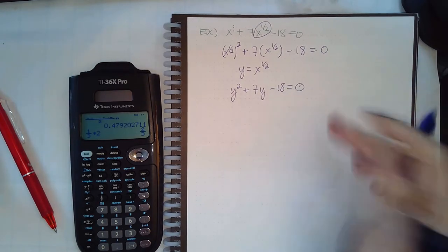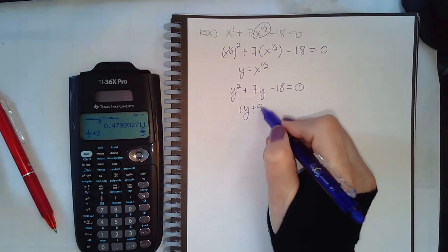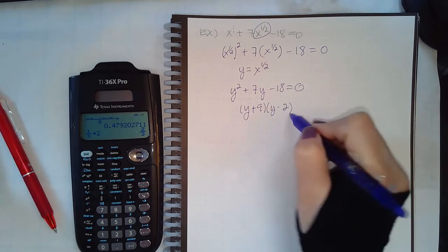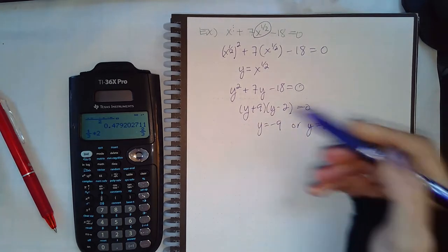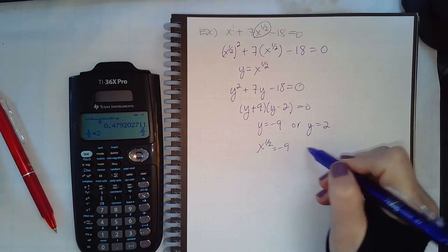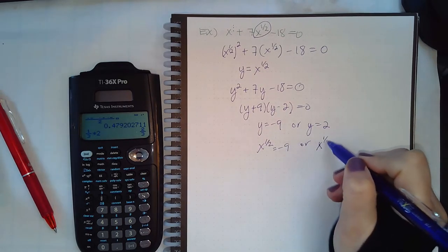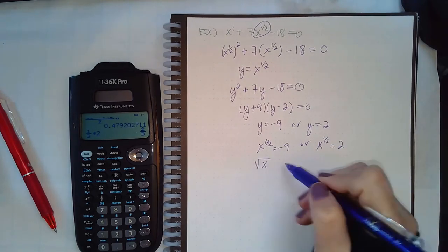So we're going to let y equal what's inside those parentheses. So the expression becomes this, and the equation is equal to zero. I can factor this, and then I'll get my two solutions for y. But again, we have to plug back in what y represents.